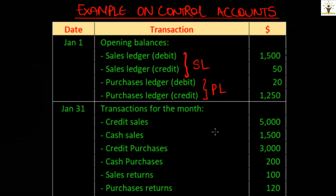Starting with the first transaction, credit sales: a credit sale is entered in the debtor's account in the sales ledger, hence will be recorded in the sales ledger control account. Cash sales, however, are recorded in the cash book and the general ledger — not in the sales ledger — so they will be ignored. The examiner could confuse you with such transactions that do not impact the sales or purchase ledger; these must be ignored when preparing control accounts.